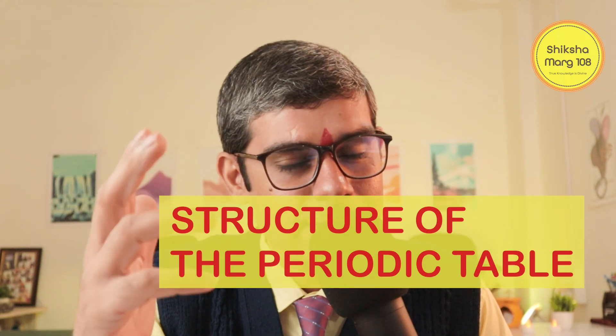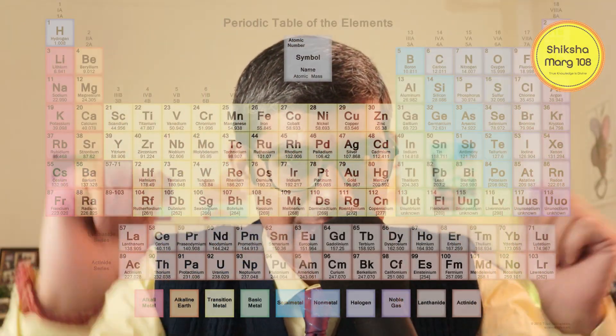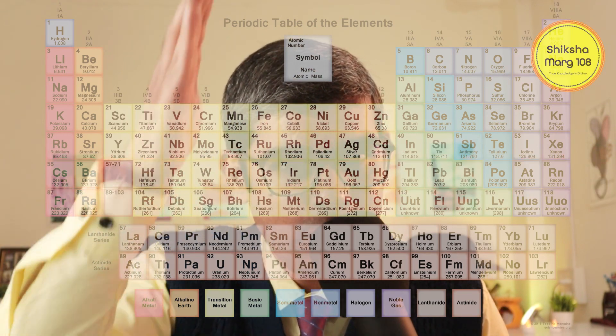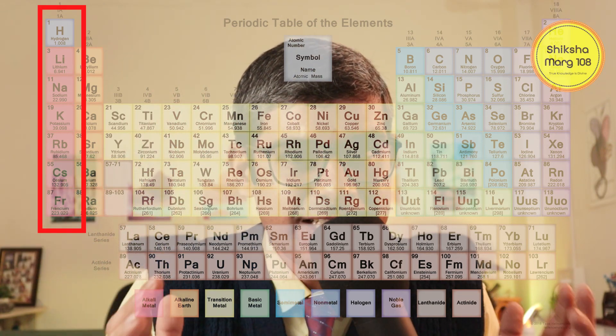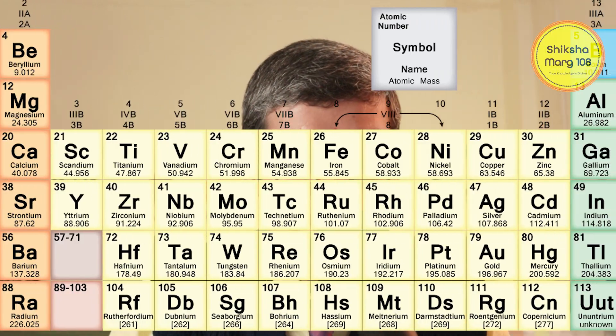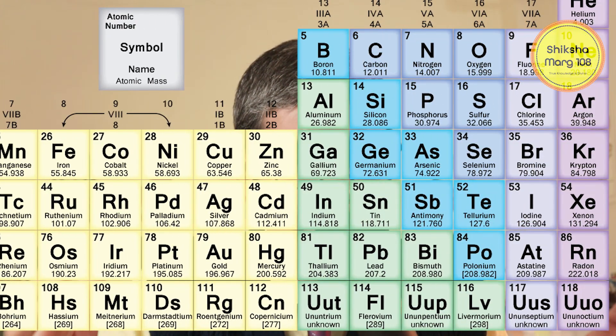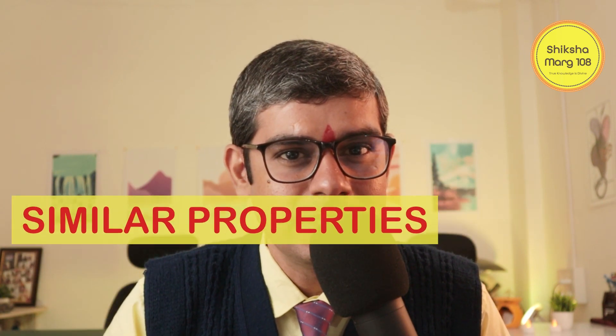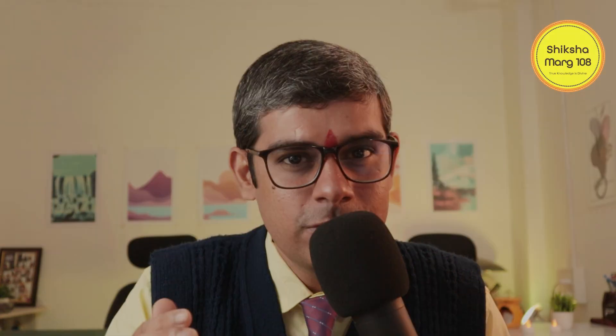Structure of the periodic table. First things first, let's paint a picture. Imagine a grid with elements neatly arranged in rows and columns. Each element gets its own unique symbol, like a superhero code name, and an atomic number — which is its proton count — like a superpower level. Now these columns aren't just for show; they represent families of elements with similar properties, like the alkali metals in Group 1, known for their explosive reactions with water.